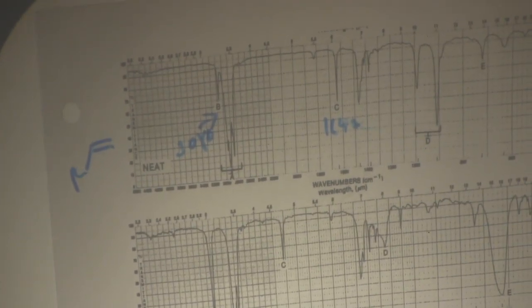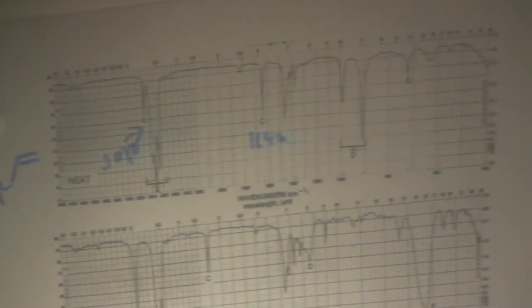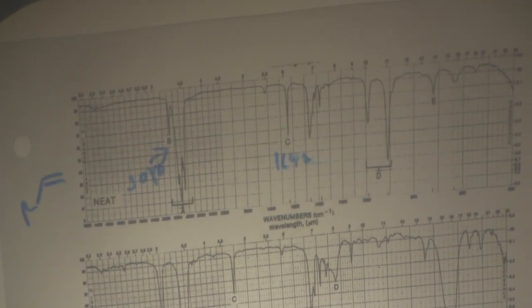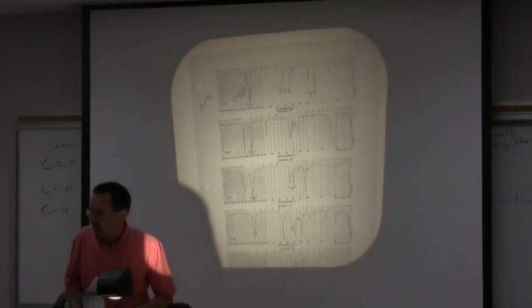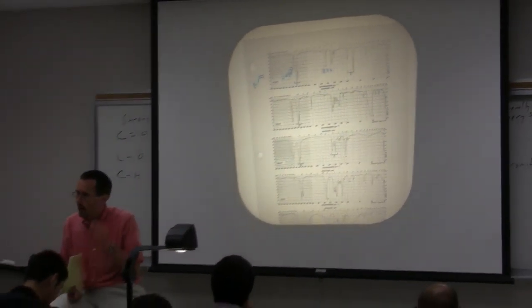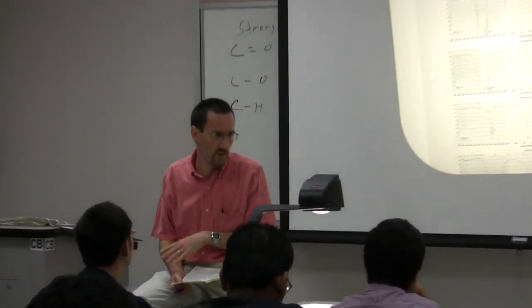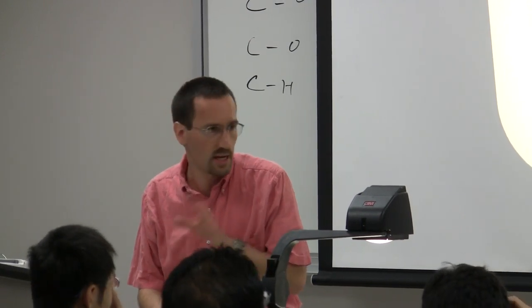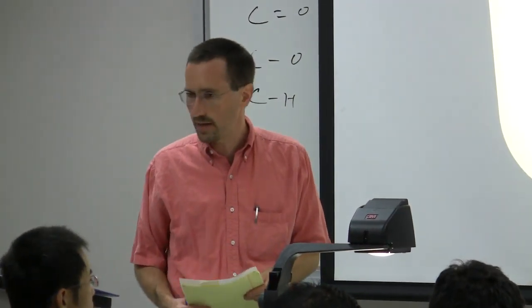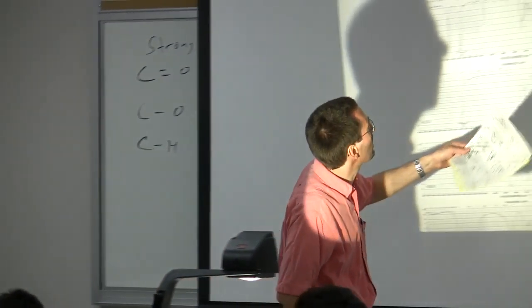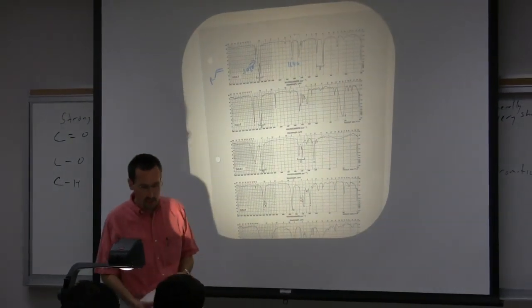I'm not putting as much emphasis on the fingerprint region because as you get to bigger molecules, it becomes more and more complicated and less easy to read. Part of the problem with the pedagogy of IR spectroscopy is that it's a relatively mature technique used since the 1950s, but the molecules we study have gotten bigger and more complex. This is a small alkene — maybe octene — but as you get to larger, multifunctional molecules, the fingerprint region gets harder to read.